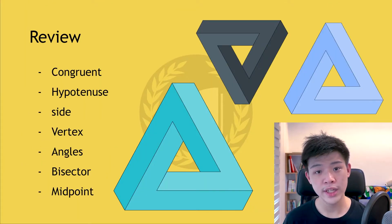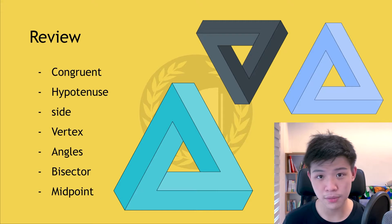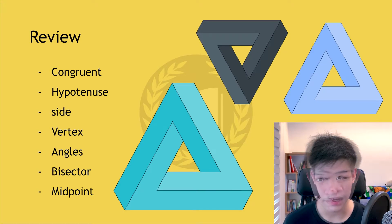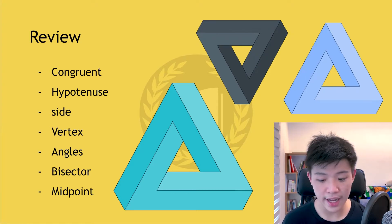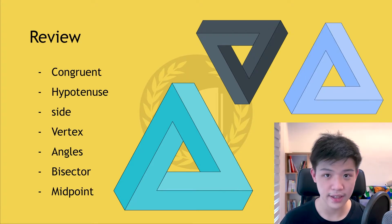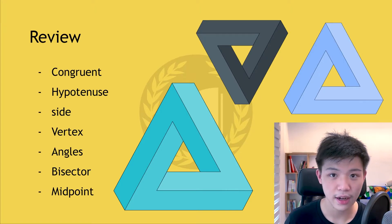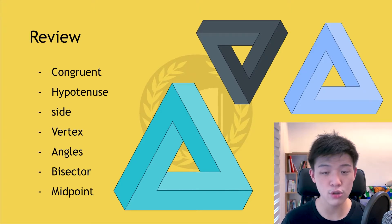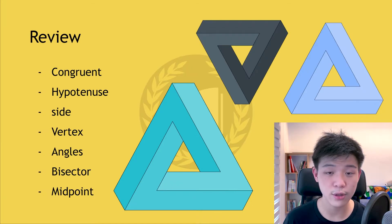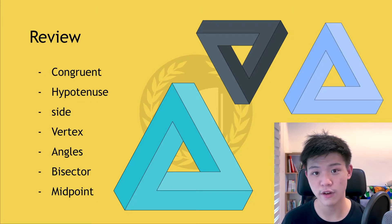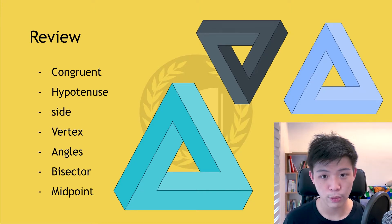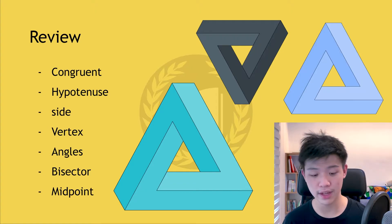But first, we need to review what we know about geometry. These terms are all must-knows if we want to do proofs. Congruent means same. Hypotenuse means the longest side in a right triangle. A side is simply the side of a triangle. A vertex is where two sides intersect. Angles are a measure of how much two lines open up. A bisector is a line that goes through the middle of a segment or a shape, whereas the midpoint is simply the middle of a line.